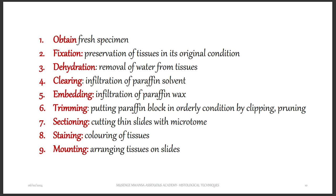After embedding comes trimming — putting the paraffin block in orderly condition by clipping and pruning what is not necessary. Then comes sectioning — cutting the embedded tissue into very thin slides using a microtome. After sectioning, the tissue is stained using dyes so that structures like organelles can be clearly seen. Finally, the tissue is mounted on a slide and placed on the microscope for review.